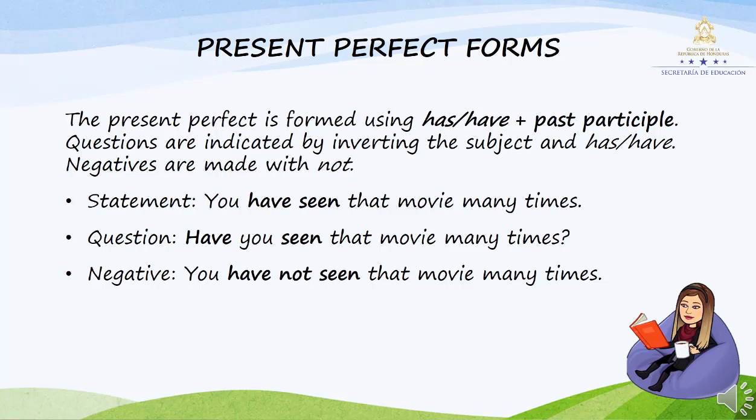El presente perfecto se forma usando 'has' o 'have' más el participio pasado. Las preguntas se indican invirtiendo el sujeto y 'has' o 'have.' Los negativos están hechos con 'no.' Declaración: Has visto esa película muchas veces. Pregunta: ¿Has visto esa película muchas veces? Negativo: No has visto esa película muchas veces.